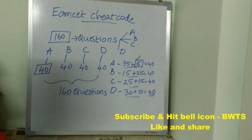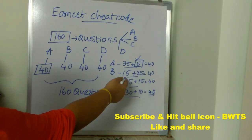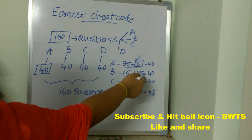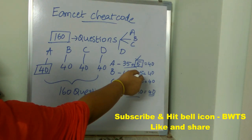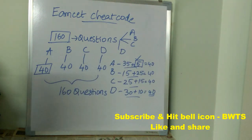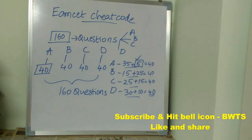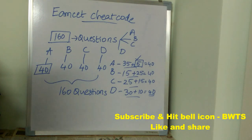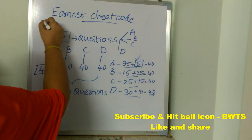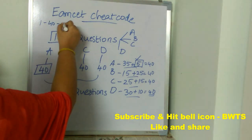Option B was used 15 times, so you can add it 25 more times to reach 40. You need to balance each option so that each reaches a total count of 40 across all 160 questions.